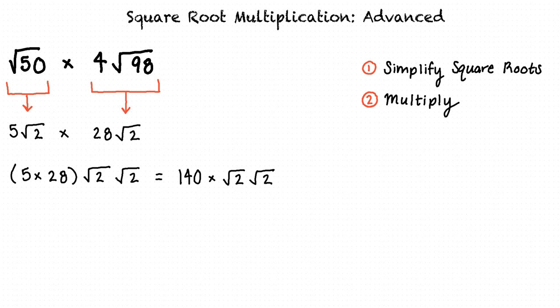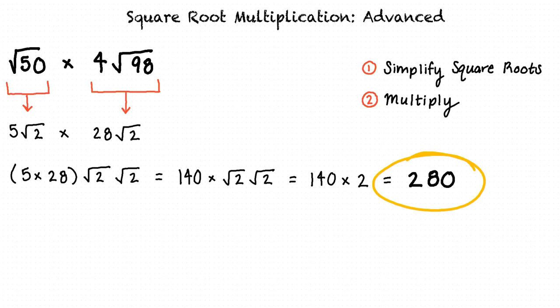This equals 140 times the square root of 2 times the square root of 2, which is equivalent to 140 times 2, which results in 280. And 280 is our final answer. Awesome work!